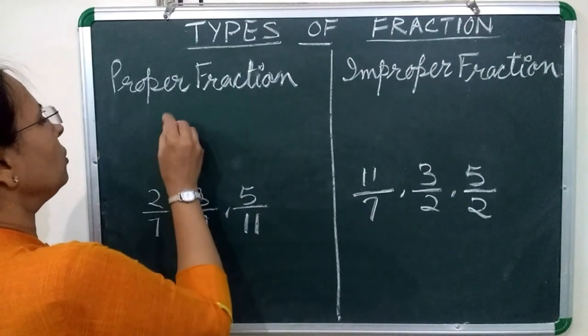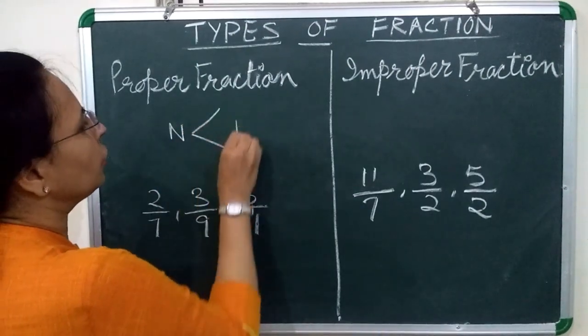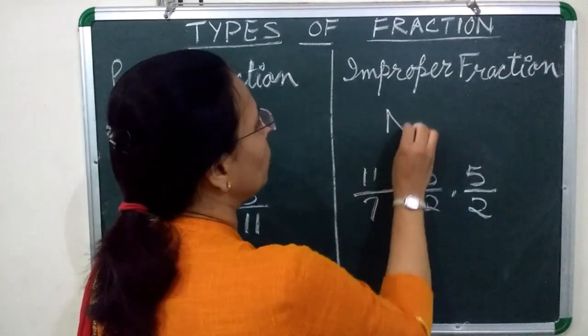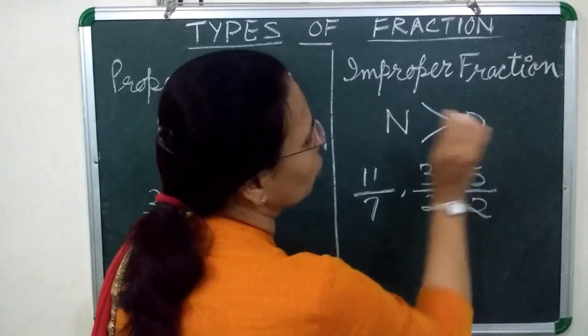Proper fraction: numerator is less than denominator. Improper fraction: numerator is greater than denominator.